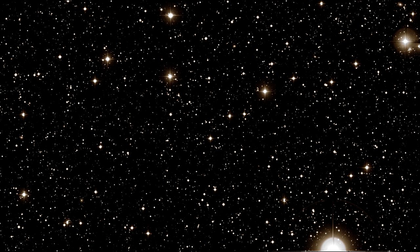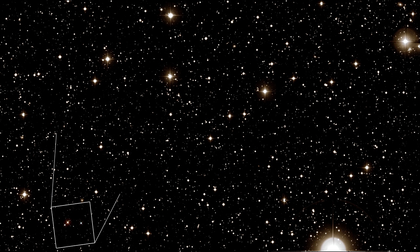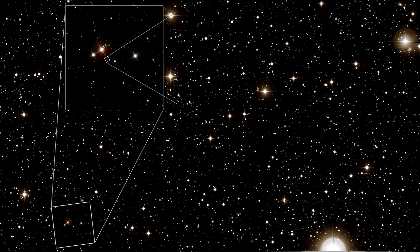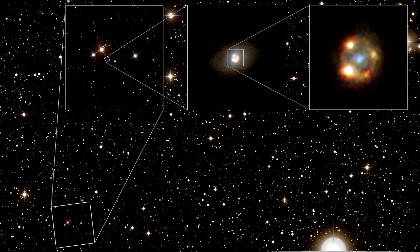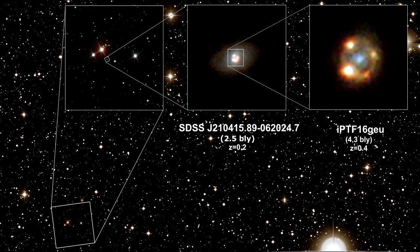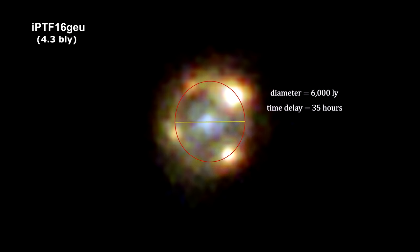In 2017, a Swedish-led team of astronomers used the Hubble Space Telescope to analyze multiple images of a gravitationally-lensed Type Ia supernova. This had never been done before. Here we see the lens galaxy in the middle frame — it's over two billion light-years away. The four images of the supernova can be seen in the right-most frame; it originated over four billion light-years away. These four images of the exploding star and the time difference in their light profiles can be used to measure the Hubble constant in a completely different way.